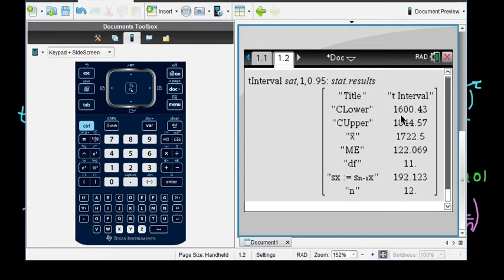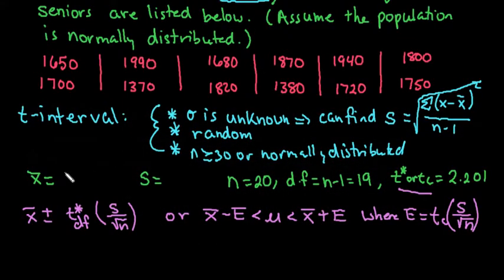This would be your lower bound of your interval, the 1600.43. Your upper bound would be 1844.57. This is your x-bar, your sample mean. And then right here represents our sample standard deviation. I already have all that written down on paper. I'm going to plug it in here. I would just pull all this important information out of the calculator directly because hand calculations take way too long.